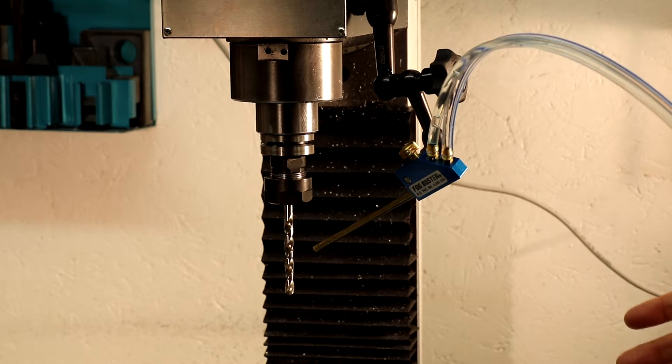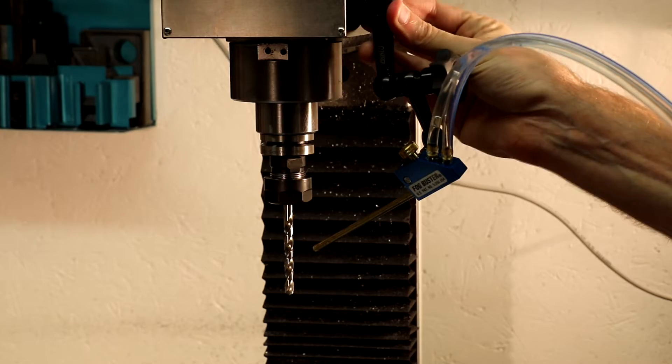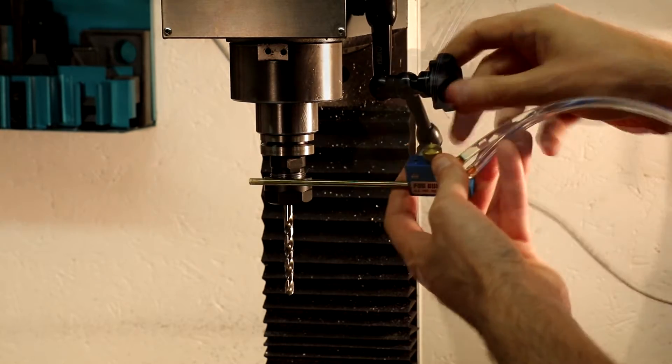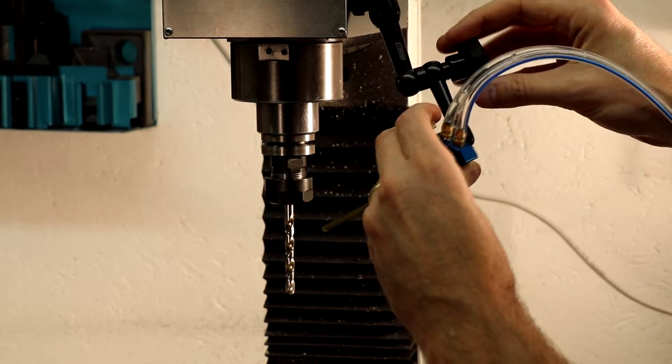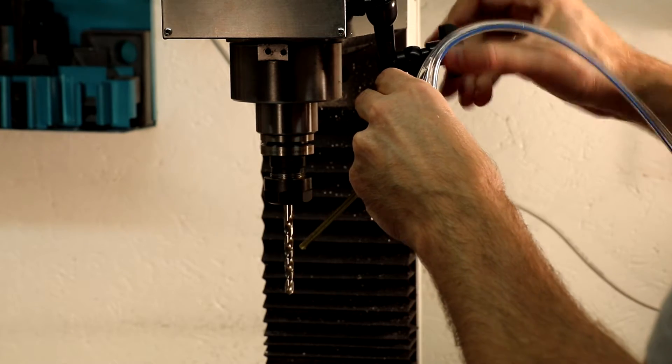The Noga base version solves both of these problems. It's rigidly mounted to the side of the mill and it's very easy to adjust. Just loosen the Noga arm, move the mister into position, and tighten it down.